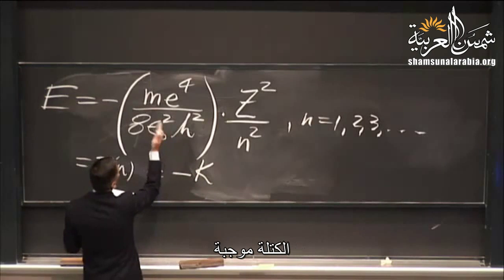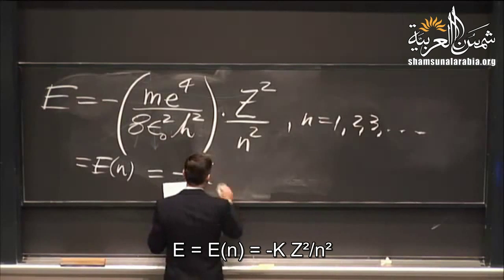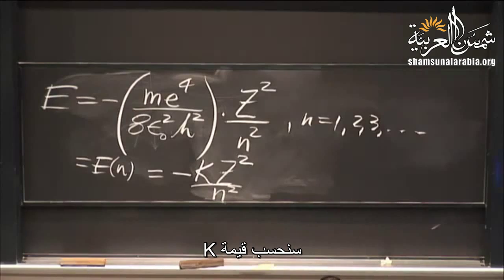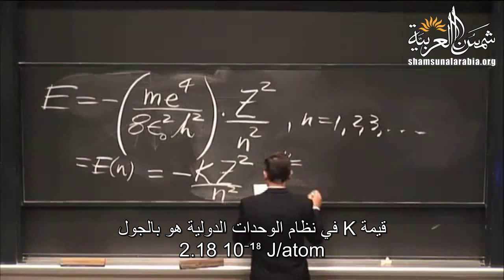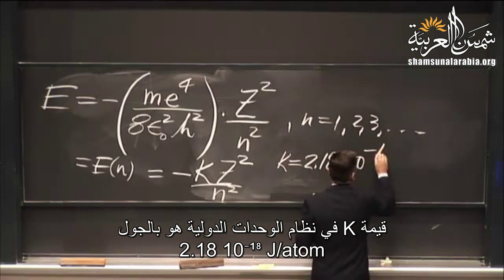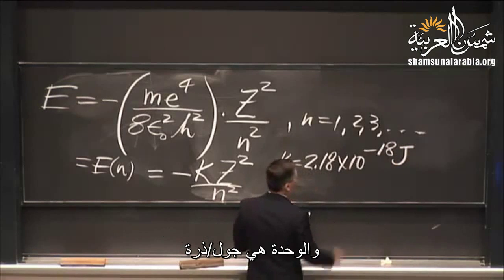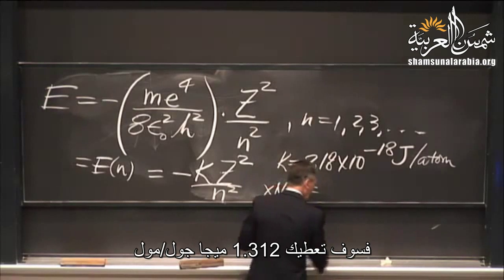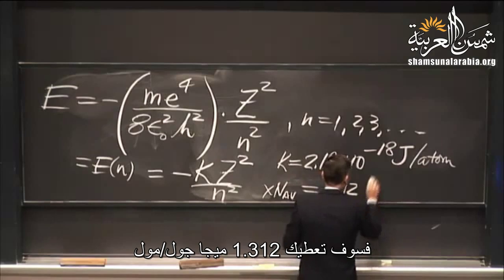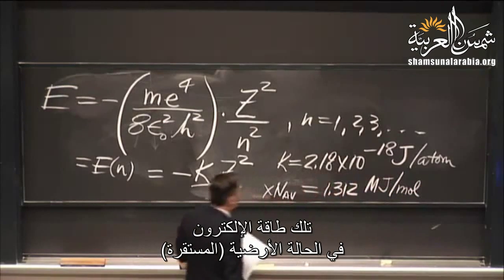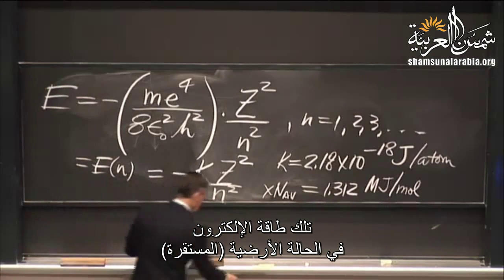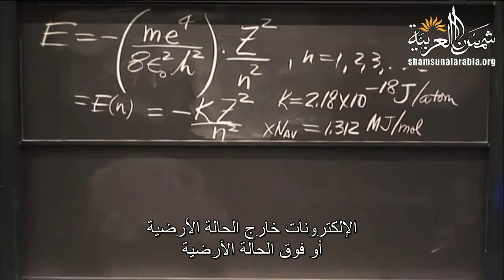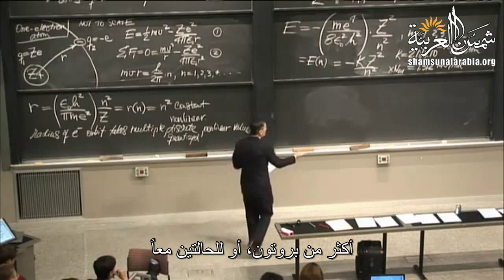Evaluating K in SI units gives 2.18 × 10⁻¹⁸ joules per atom, or multiplying by Avogadro's number: 1.312 megajoules per mole. That's the energy of the electron in the ground state of atomic hydrogen. We can then adjust with Z and n to address electrons above the ground state or atoms with more than one proton.